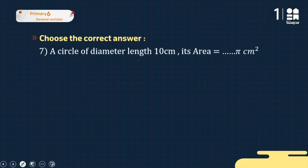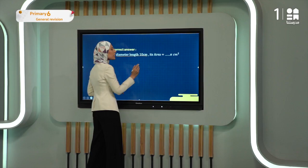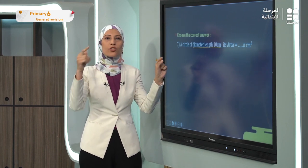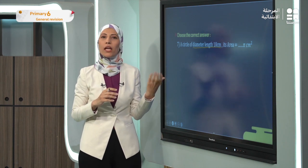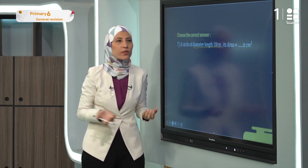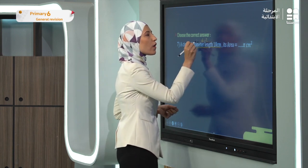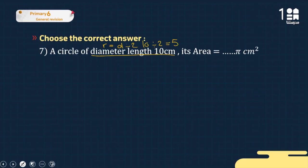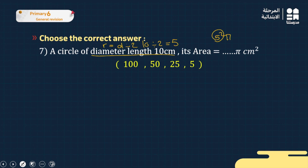Exercise seven: a circle with diameter 10 cm — be careful, that's the diameter, not the radius. The area formula is π × r². To find the radius from the diameter, divide by 2: 10 ÷ 2 = 5. So radius = 5, and the area = 5² × π = 25π. The answer is 25π.